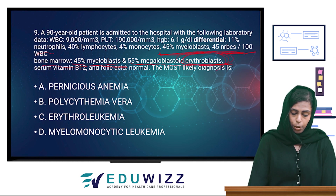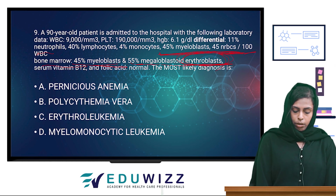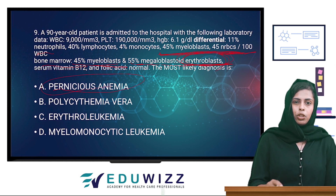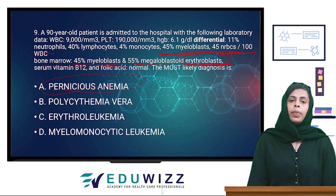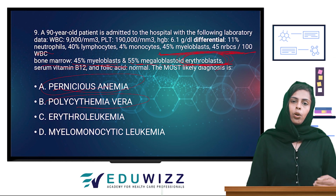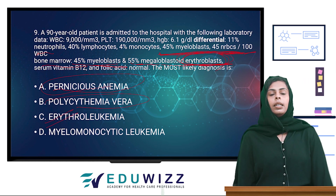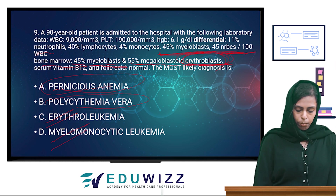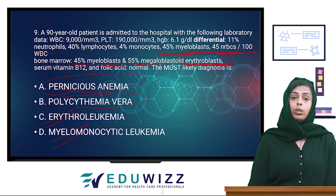The options are Pernicious Anemia, Polycythemia Vera, Erythroleukemia, and myelomonocytic leukemia. Pernicious Anemia is ruled out because B12 is normal. Polycythemia Vera is ruled out because hemoglobin is decreased — normally polycythemia shows increased hemoglobin. The remaining options are Erythroleukemia and myelomonocytic leukemia. This is 55% erythroblast cells.